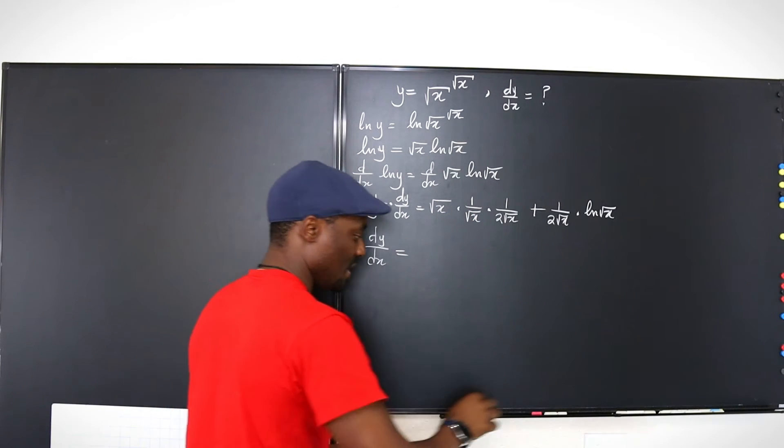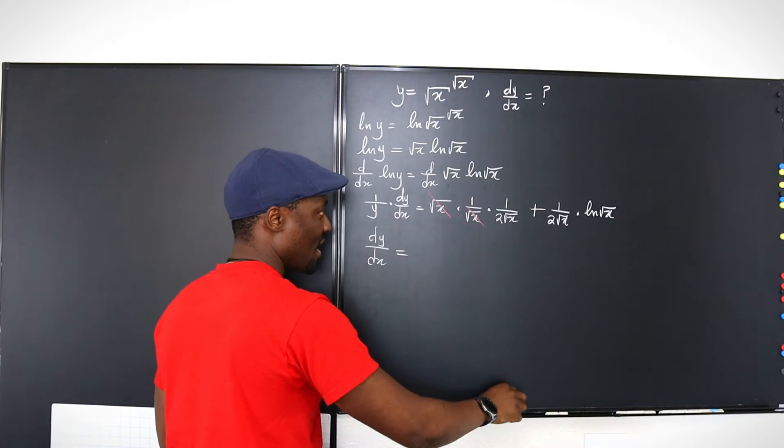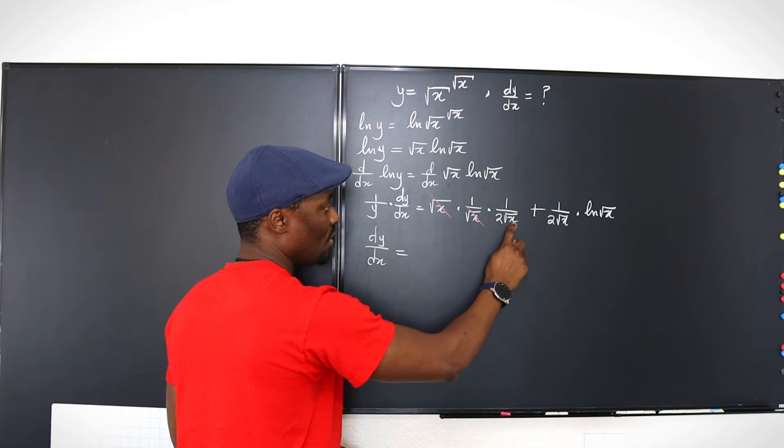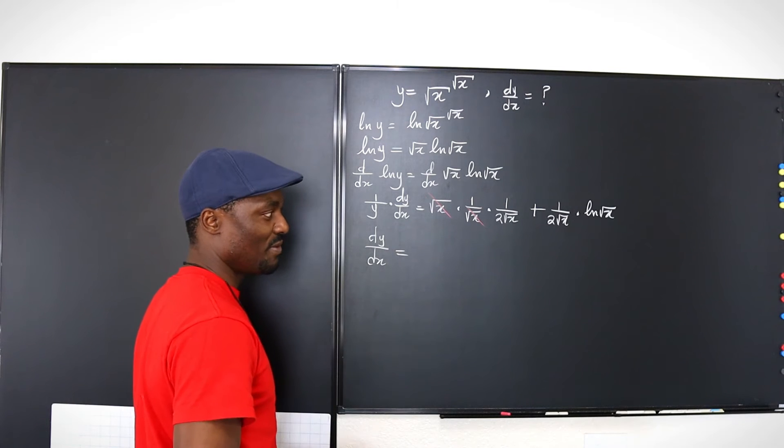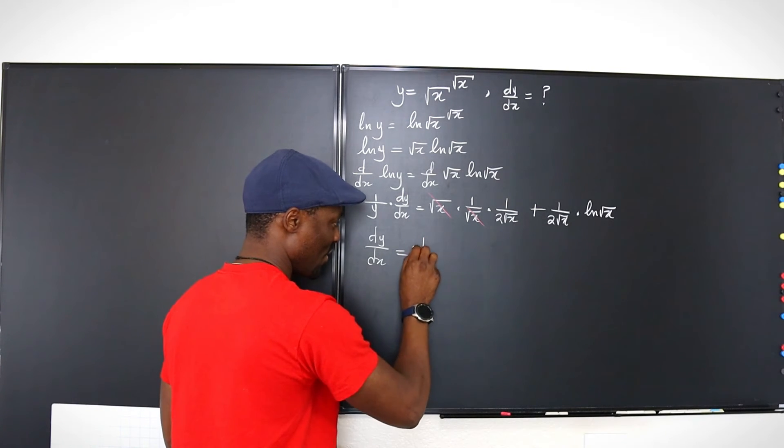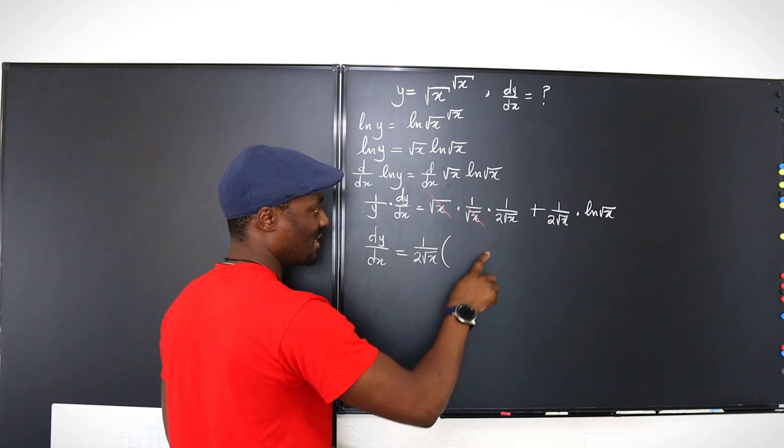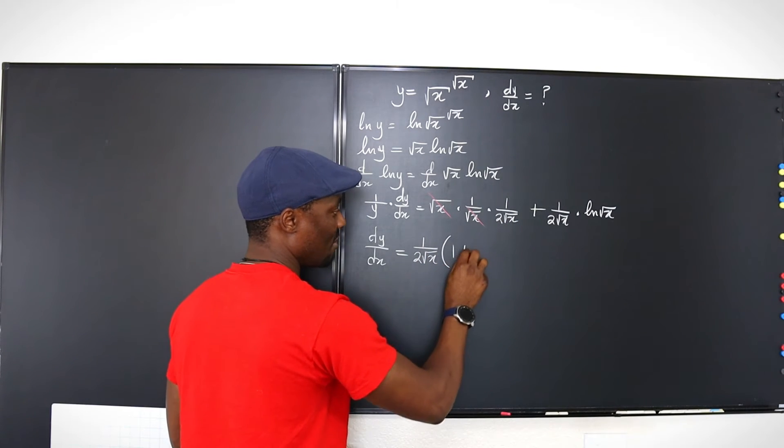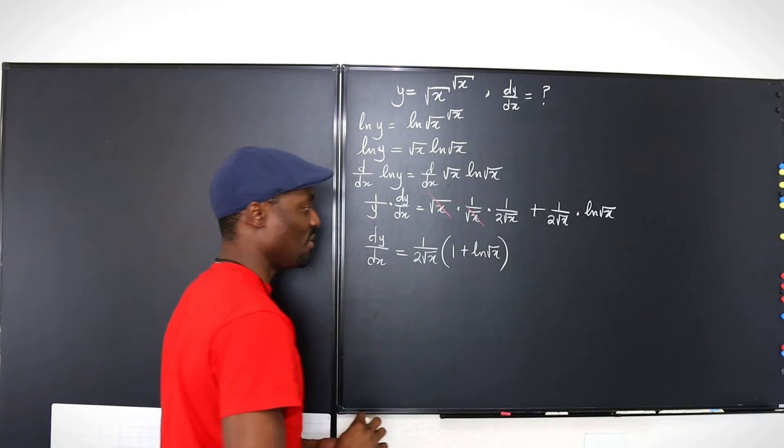But first, let's take care of this. You see, this will cancel this, and what you have left is 1 over 2 square root of x. And what you have here too is 1 over 2 square root of x. You know what I'm going to do? I'm going to take out 1 over 2 square root of x. And what is left inside is going to be 1 plus ln square root of x. Beautiful.